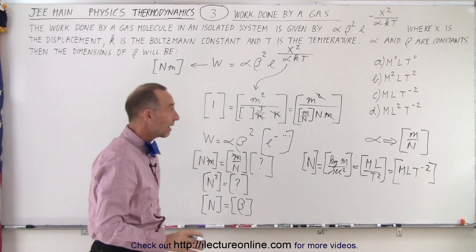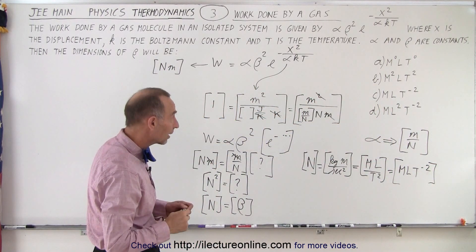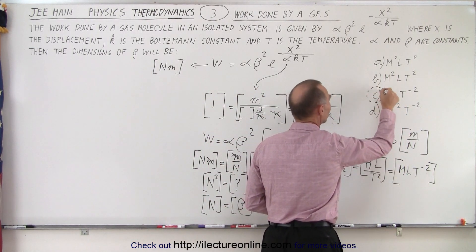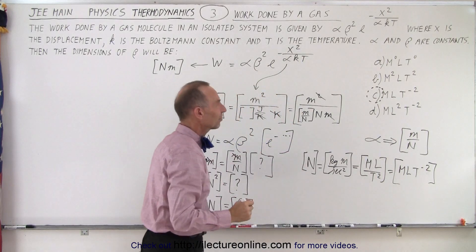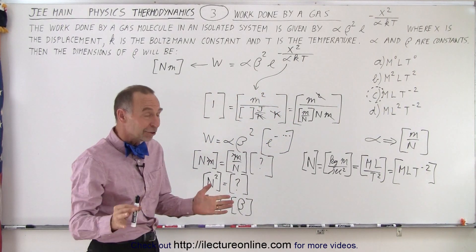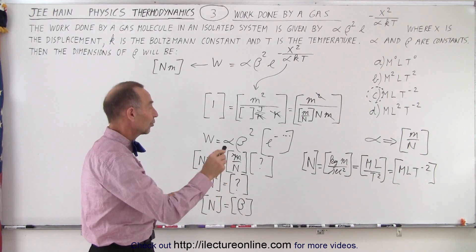And now, do we have the proper answer there? And it looks like this matches up with C, so C is the answer, mass, length, time to the negative two. And so in a convoluted way, we finally figured out the units associated with beta.